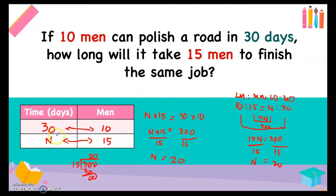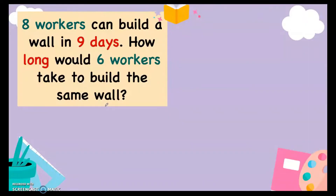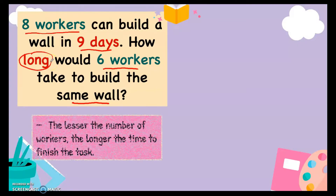So how long will it take? It will take 20 days for 15 men to finish the same job. Let's have more examples. Eight workers can build a wall in nine days — how long would six workers take to build the same wall? If eight workers build the wall it takes nine days. If we decrease to six workers, the wall takes longer. The lesser the number of workers, the longer the time to finish the task — therefore this is an example of indirect proportion.